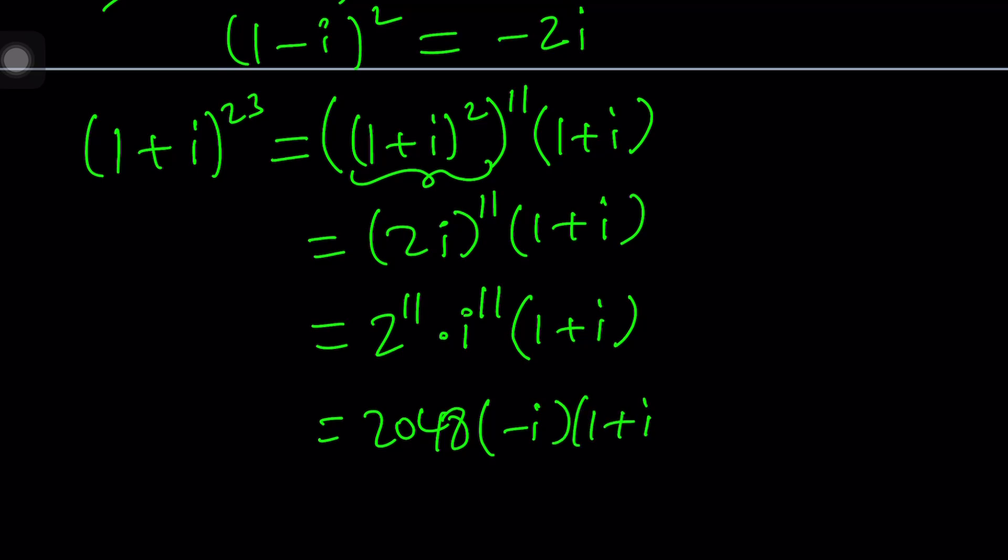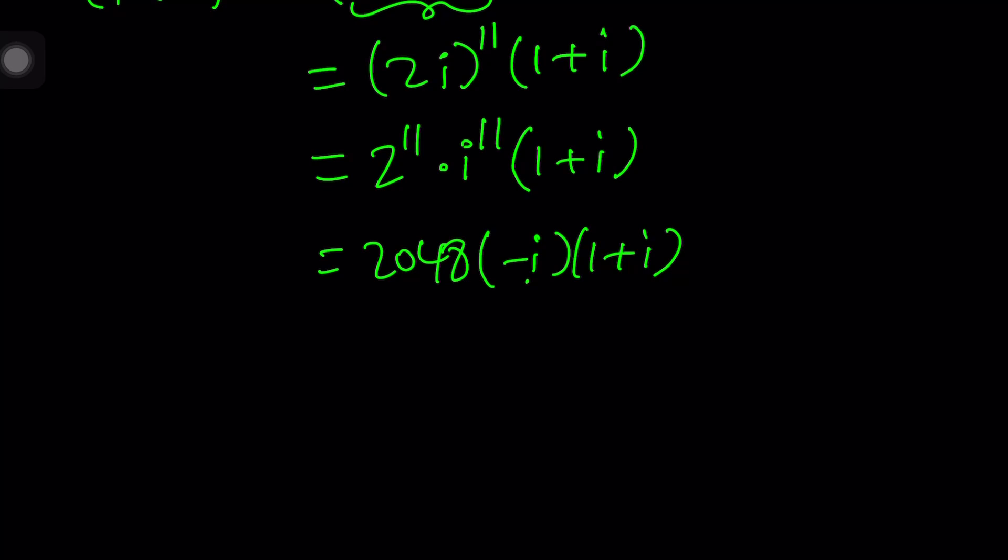When you distribute the (1 + i) over that number, you'll get something simpler. It's going to give us negative i, and then negative i² is positive 1, so you're going to get 2048 multiplied by (1 - i). You can leave it at that for now, and then see what the other one gives us, and then we can put these two things together.